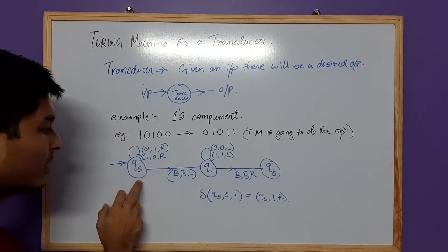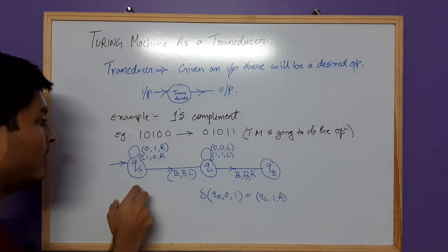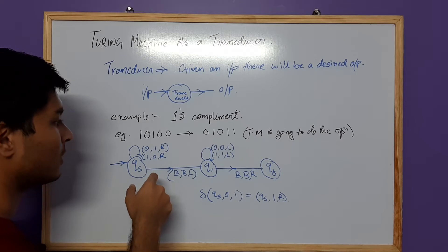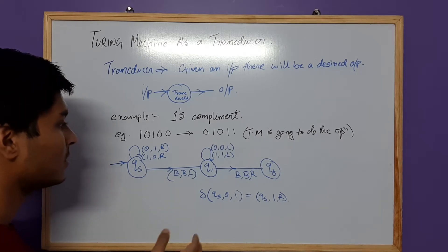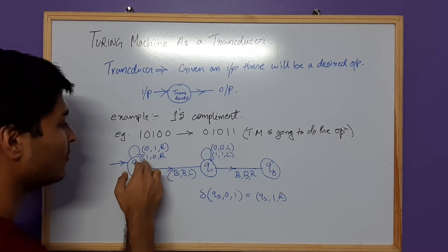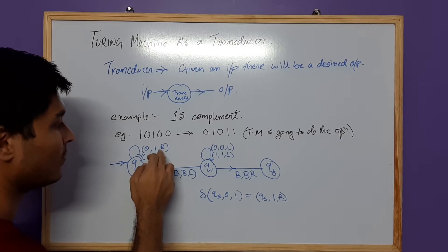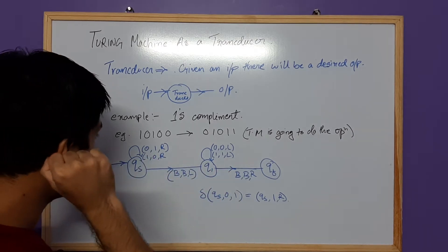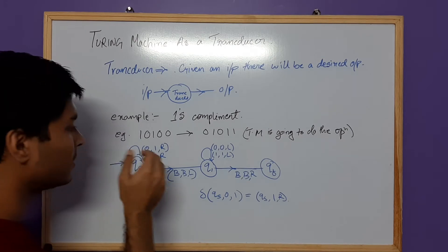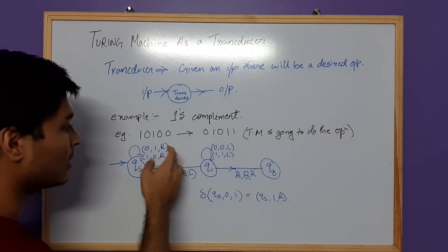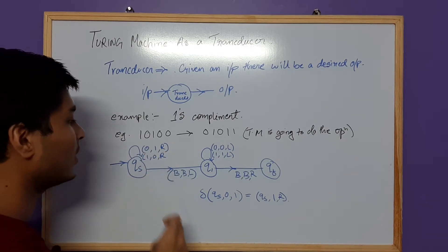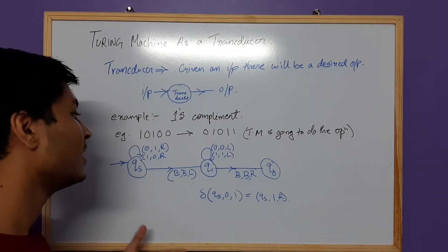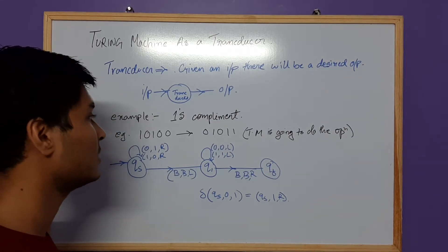Basically, we start in state qs and we are going to encounter any number of zeros or ones. If we encounter a zero we convert it to a one; if we encounter a one we convert it to a zero, and we move right. We could have just stopped here because that's the main job — converting ones and zeros — but we are going to refine this operation.